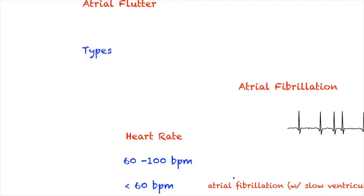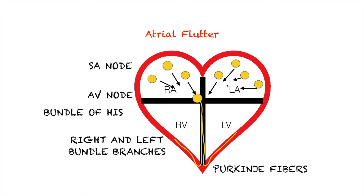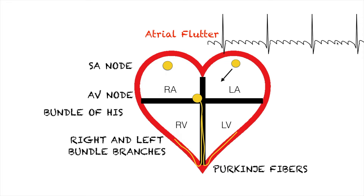Now let us talk about atrial flutter. In AFib there are multiple excited cardiac cells within the atria. However, in atrial flutter, there is only one excited cardiac cell on top of the SA node. This is just a representation of an extra cardiac cell — not necessarily found only within the left atrium; sometimes the extra cardiac cell will be found in the right atrium as well. The firing of this extra cardiac cell together with the SA node forms these flutter waves right here. Your atria are contracting much faster than normal, almost similar to AFib, but it is more uniform.